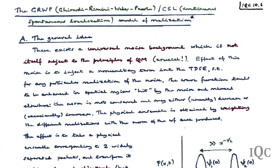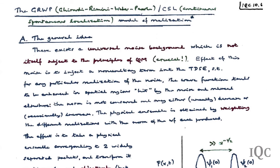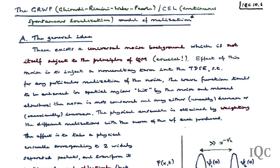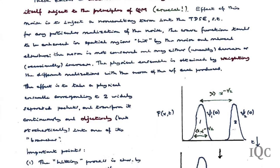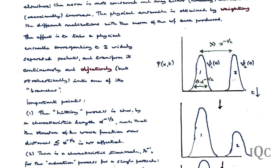Since the term is non-unitary, the norm of the wave function is not conserved—generally it tends to decrease, though occasionally it increases. The key nonlinear element is that different realizations of the noise are weighted by the norm of the wave function each produces, defining the physical ensemble. This non-quantum-mechanical operation produces an appropriate nonlinear effect: the physical ensemble corresponding to two widely separated wave packets is continuously, objectively, but stochastically transformed into one of its branches.